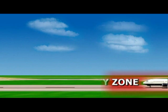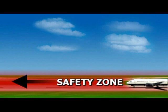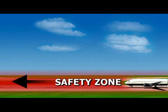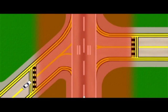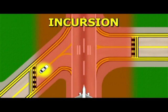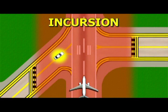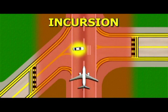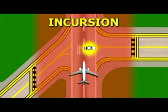Aircraft operate with an imaginary safety zone around them. While taking off and landing, they must maintain a certain safe distance of separation between themselves and other objects. A runway incursion happens when an object, which can be another aircraft or vehicle, enters an aircraft's safety zone.